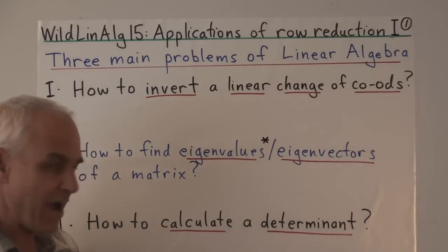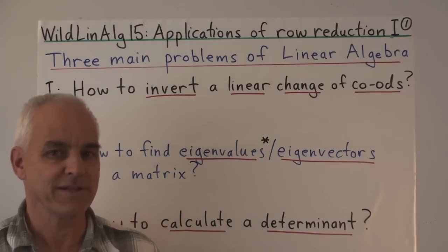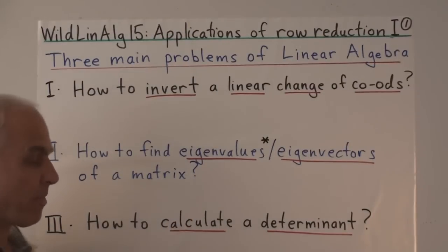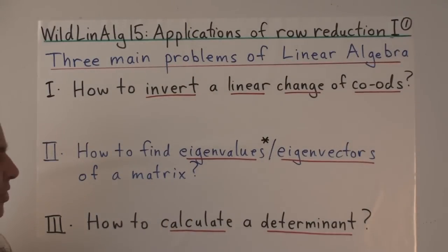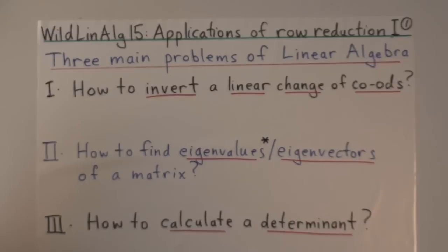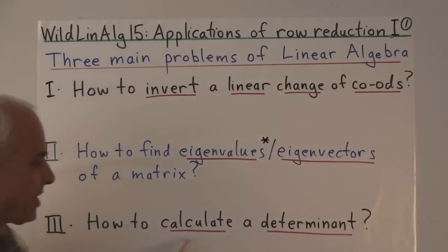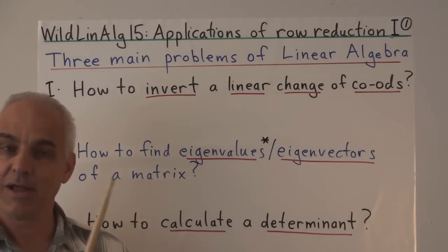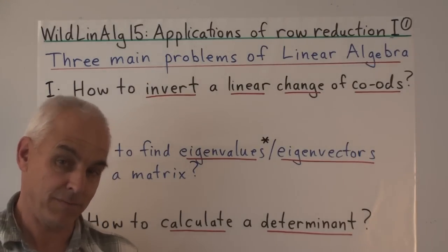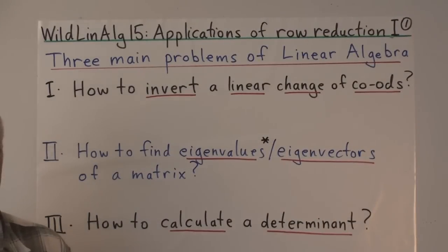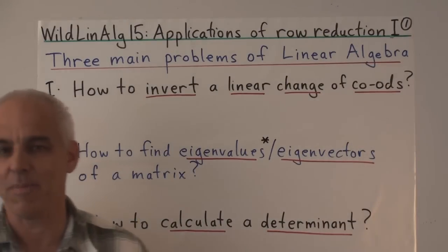Finding the eigenvalues, as we'll see, is actually quite a subtle issue that's finessed largely in many linear algebra courses. We'll have to say a little bit more about eigenvalues later. But for today, we're just going to concentrate on the two-dimensional situation where things are reasonably straightforward. Our third most important problem is how to calculate the determinant of a square matrix. Determinants are for us the algebraic embodiments of area in two dimensions, or volumes in three dimensions. We want to be able to calculate areas and volumes, and the determinant allows us to do that. Today we're going to see how row reduction gives us an alternate way of thinking about determinants.